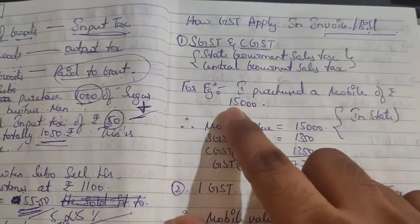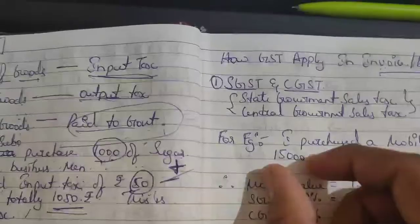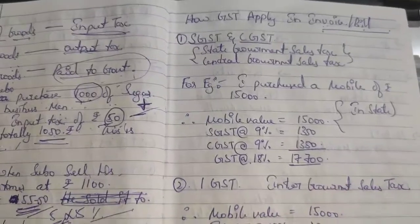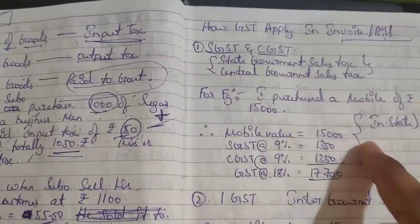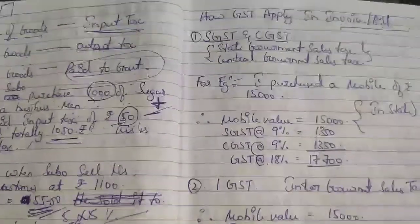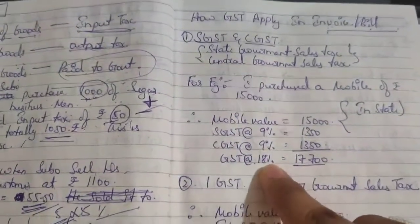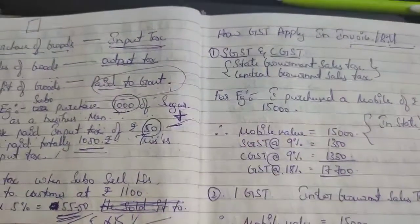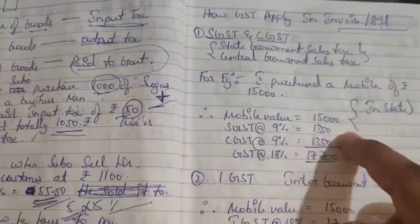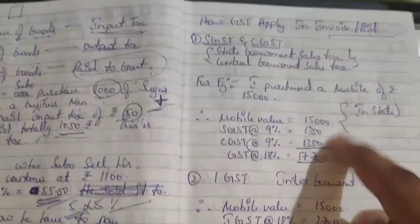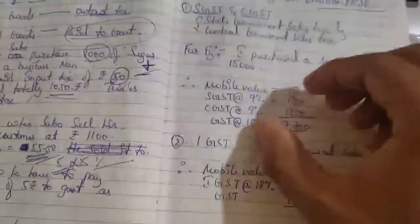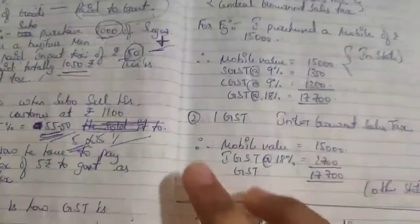For example, I purchase a mobile of 15,000 rupees in my state, Karnataka. The GST percentage on the mobile is 18 percent. The 18 percent will be equally divided into two parts — SGST and CGST — so each is 9 percent. For a 15,000 rupee mobile, that comes to 1,350 each for SGST and CGST.